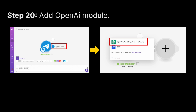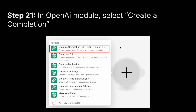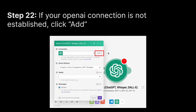Go to Make and hover over your Telegram bot module to find Add Another Module. Click it and type OpenAI — you should see the OpenAI option. Click on the OpenAI module. It will ask you to specify the action; select Create a Completion, which covers GPT-3, GPT-3.5, and GPT-4. If it's your first time, your connection will be blank, so click Add to establish the connection to OpenAI from Make.